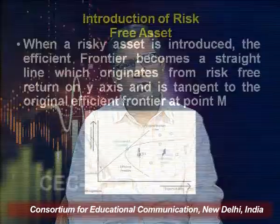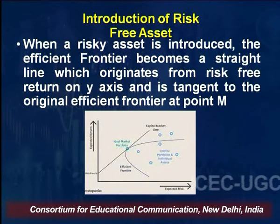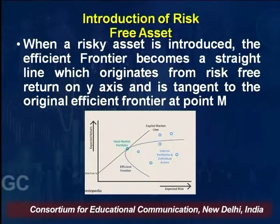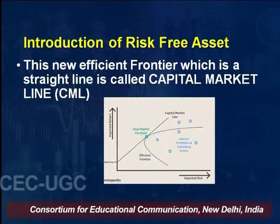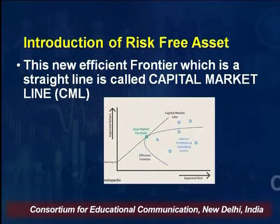When a risky asset is introduced, the efficient frontier becomes a straight line. This is a straight line which originates from the risk-free return on the y-axis — not from the origin where x-axis and y-axis meet. For example, if the risk-free rate is 4%, the line starts from 4% on the y-axis. It is a straight line which is tangent to the original efficient frontier at point M. This new efficient frontier is called the capital market line.